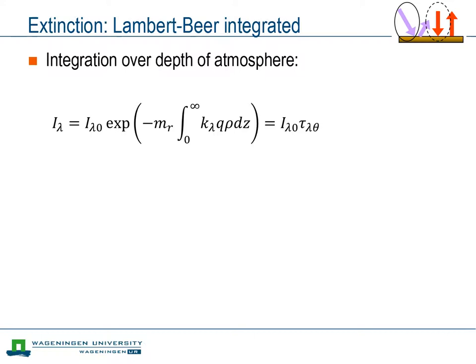Now that we have an expression for how much radiation is lost at each infinitely small slice of air, we can determine the effect of the entire atmosphere by integrating Lambert-Beer's law along the entire beam, from the top of the atmosphere down to the surface. We see that the amount of radiation arriving at the surface exponentially depends on the optical properties of the atmosphere. We have used the relative optical mass to take into account the direction of the beam through the atmosphere.